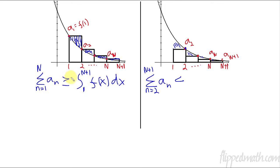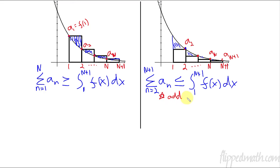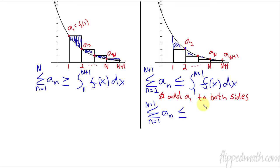Because it's an overestimate, it's larger — so the series is less than or equal to the integral. Now I'm going to add a sub one to both sides of this inequality. When I add a sub one to the left side, the new series starts at N equals one going to N plus one of a sub N. That has to be less than or equal to the same integral plus the constant a sub one.